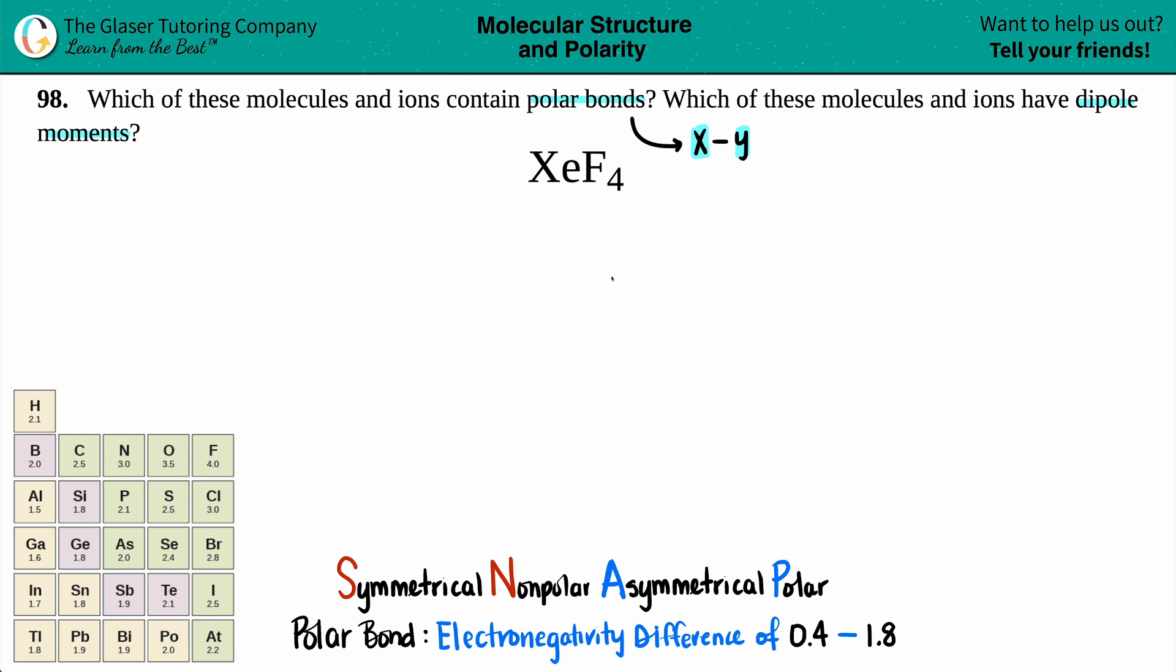The Lewis structure is going to unlock a lot of information, especially if they ask for polarity, non-polar, polar bonds, dipole moments, molecular structure, hybridization. So a Lewis structure can tell you a lot of information.